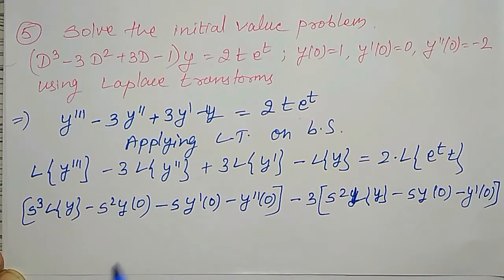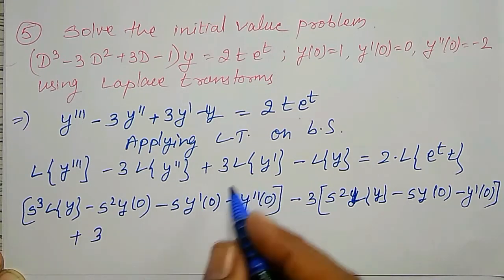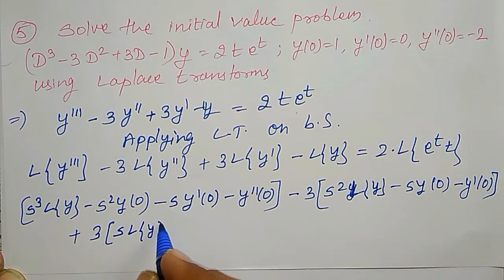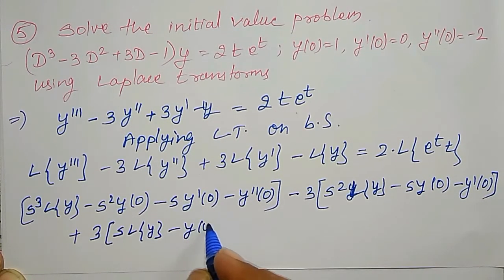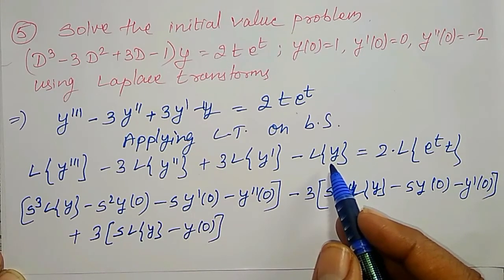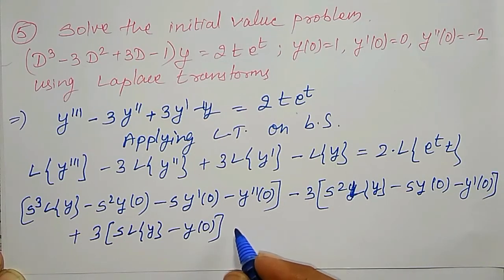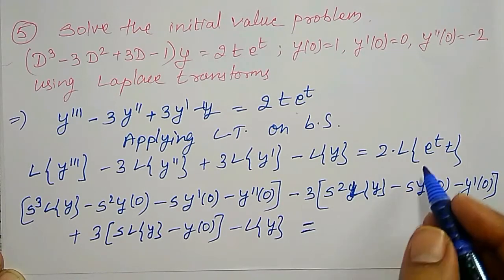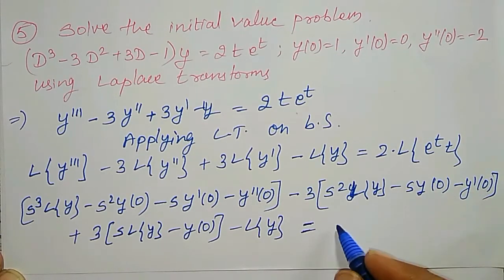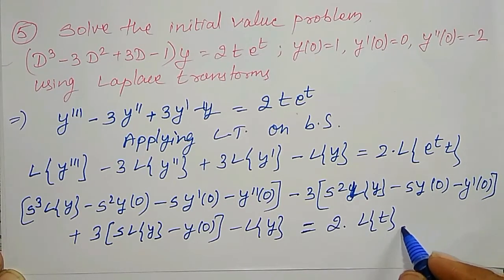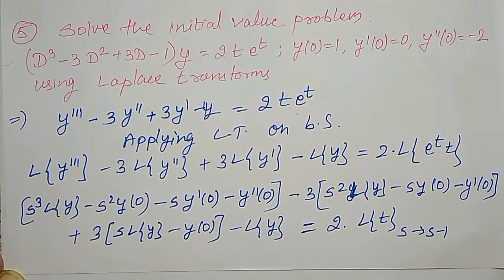Continuing, 3 times L{y'} becomes 3 times [s·L{y} − y(0)], minus L{y} as it is, equal to the right-hand side: 2 times L{t} with s replaced by s−1, which is 2/(s−1)².